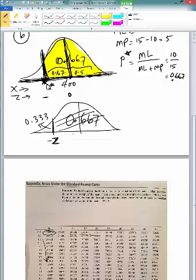That means this area to the left of it is 0.333, but because my table does not have negative z-values, I can use that same table and use the positive z-values of it to arrive at my answer.